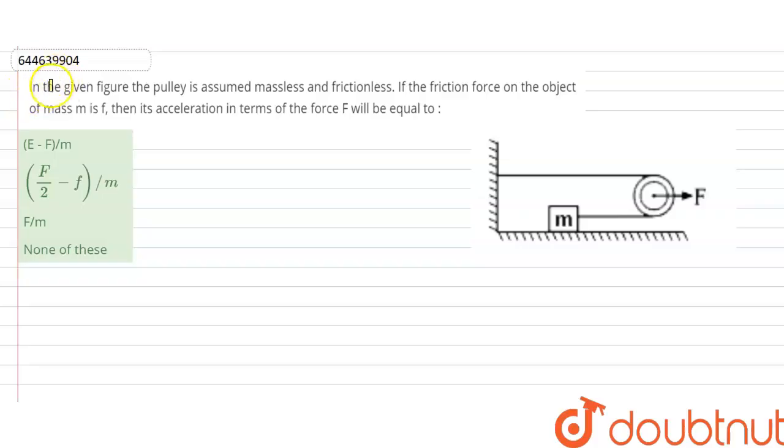Hello students, welcome to Doubtnut. Our question is: in the given figure the pulley is assumed massless and frictionless. If the friction force on the object of mass m is F, then its acceleration in terms of force will be equal to what?